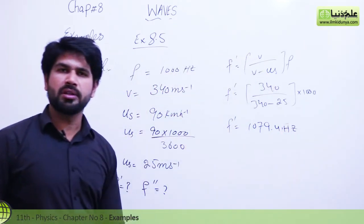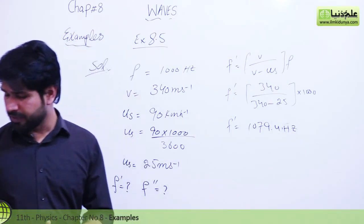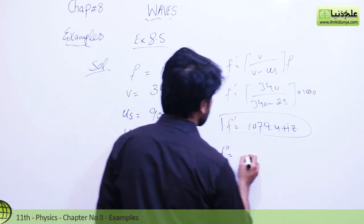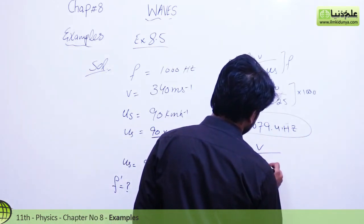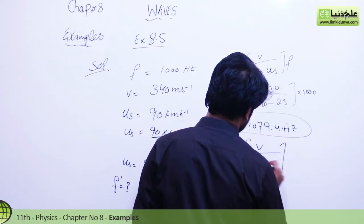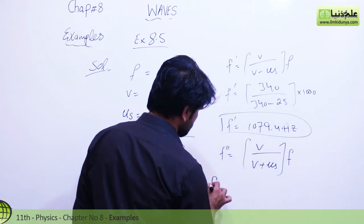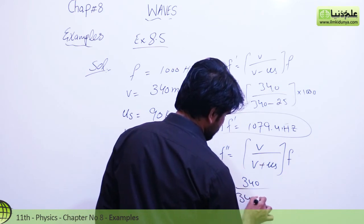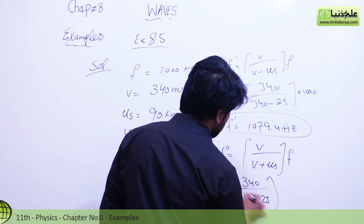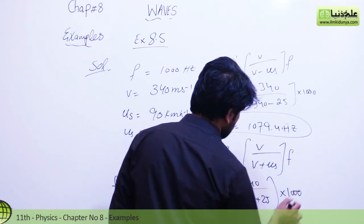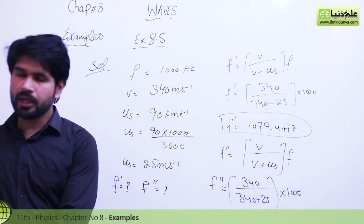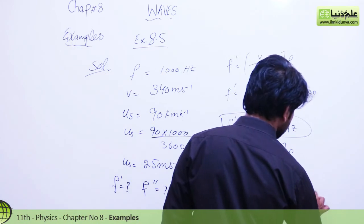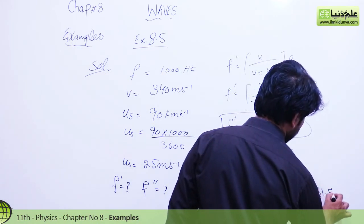Now let's find the frequency when the train is moving away from the station. The formula is f'' = V / (V + Vs) × F₀. Substituting: 340 / (340 + 25) × 1000 = 340 / 365 × 1000. Solving this gives an apparent frequency of 931.5 Hz.